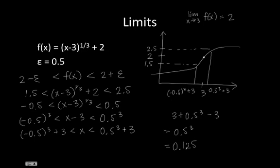So 0.125 is our greatest delta that will keep our f(x) between epsilon of 0.5 of our limit 2.